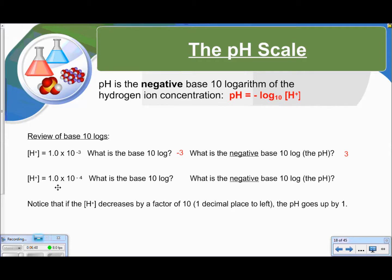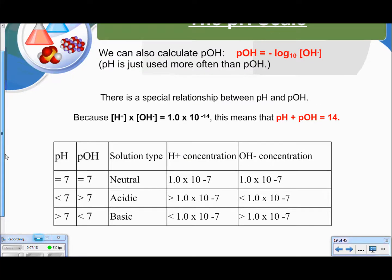If we have a hydrogen ion concentration of 1.0 times 10 to the negative 4, the base 10 log, I'm sure you guessed, it would be negative 4. But if we do the negative base 10 log, then our pH is going to come out to 4, which is still acidic. So notice that if the hydrogen ion concentration decreases by a factor of 10, meaning one decimal place to the left, the pH goes up by 1.